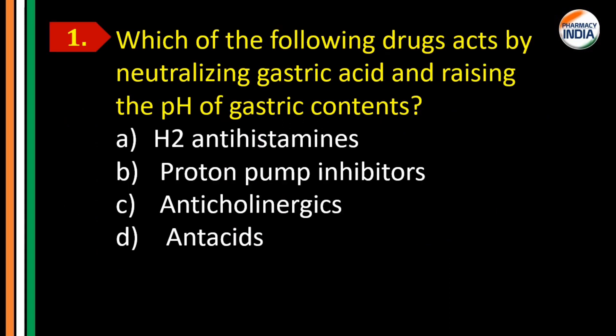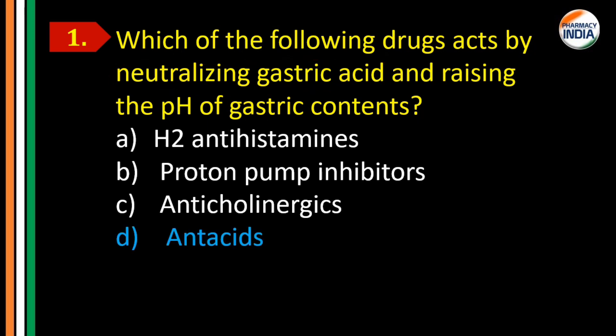The first question is: which of the following drugs acts by neutralizing gastric acid and raising the pH of the gastric content? Option A: H2 antihistamine. Option B: proton pump inhibitor. Option C: anticholinergic. Option D: antacid. The correct answer is Option D, antacid.